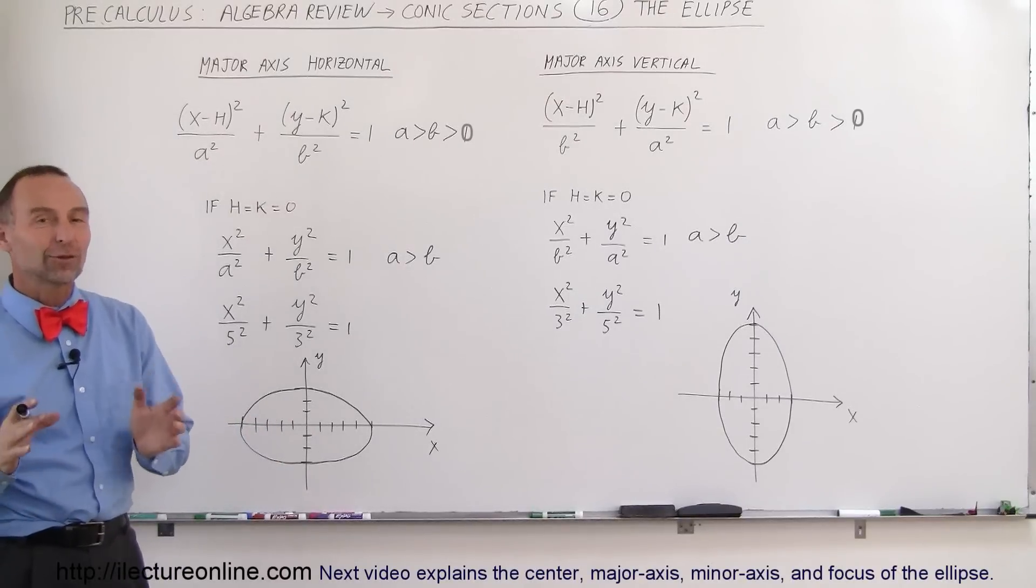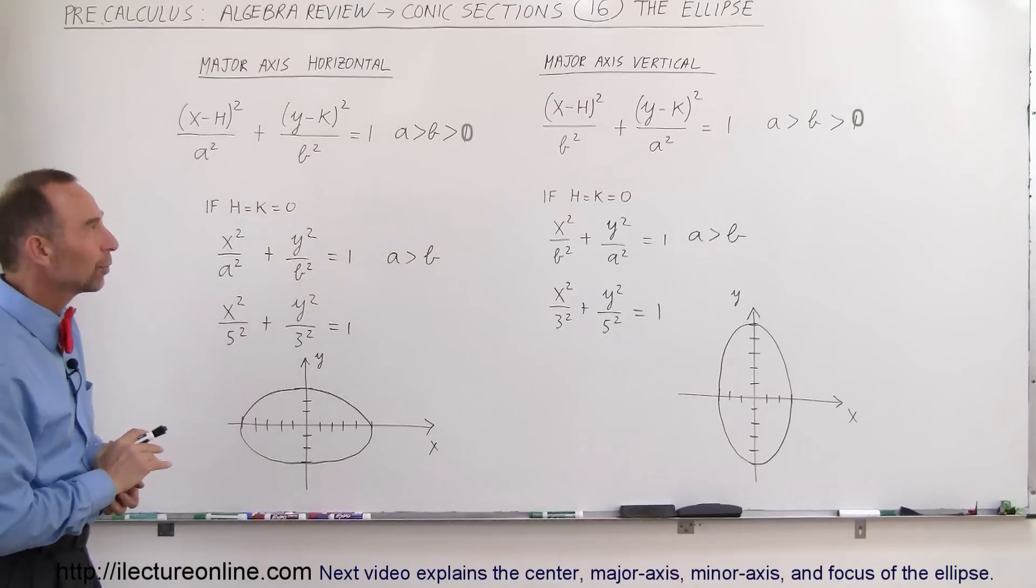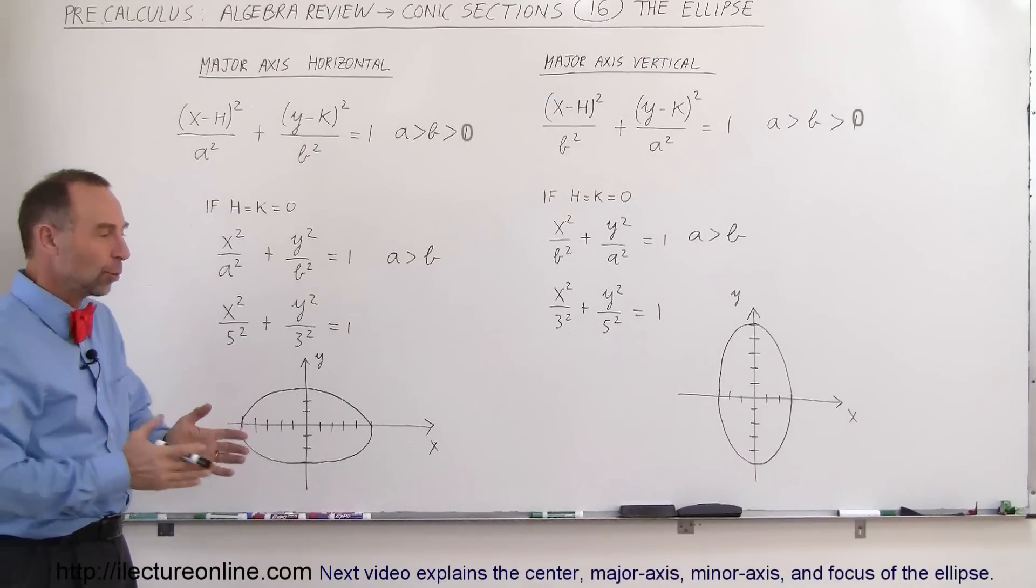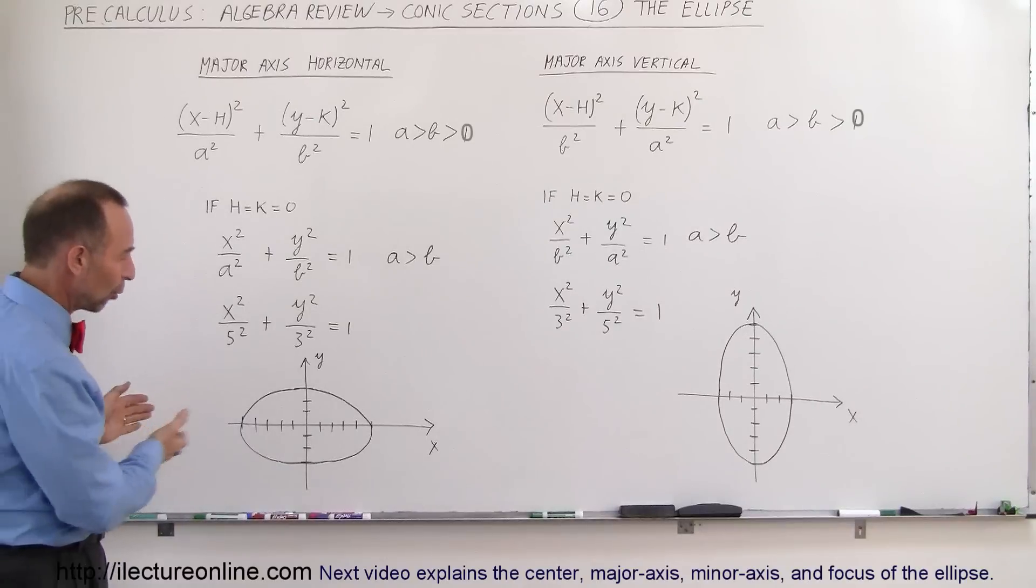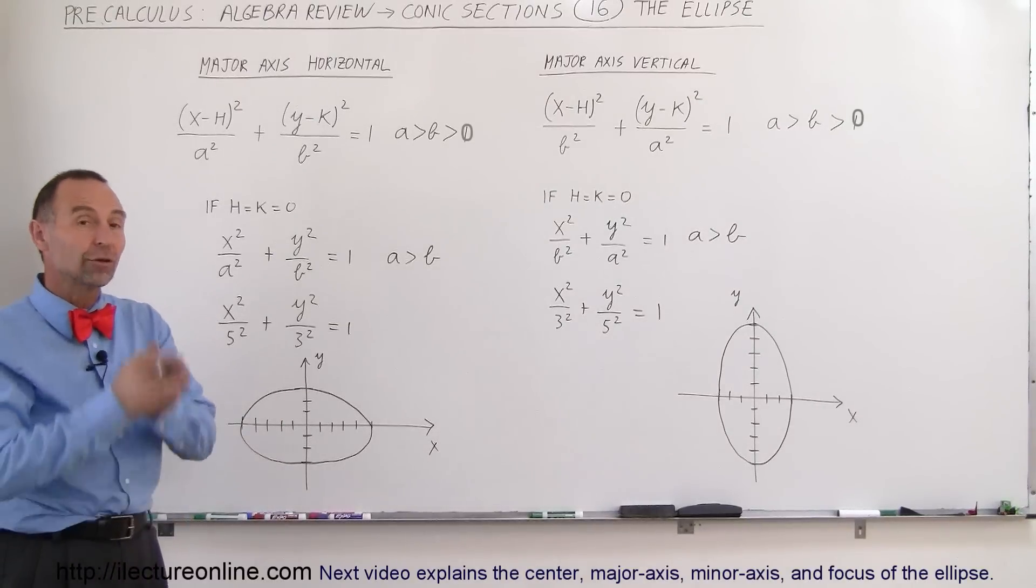Welcome to ElectronLine and now let's take a closer look at the ellipse. The ellipse can be oriented with the long or major axis horizontally or the major axis vertically.